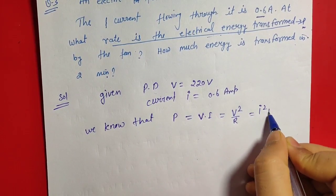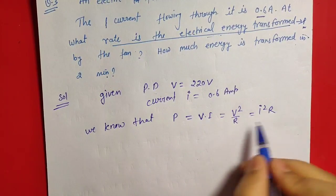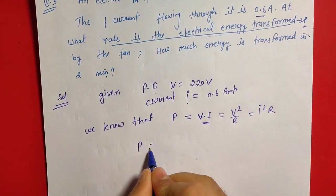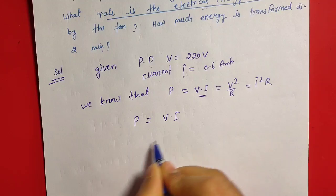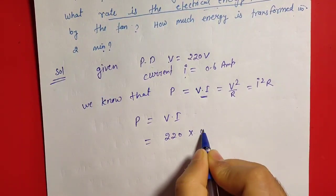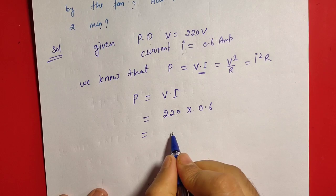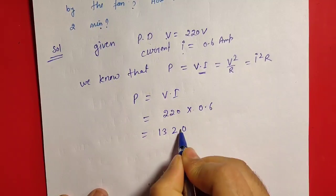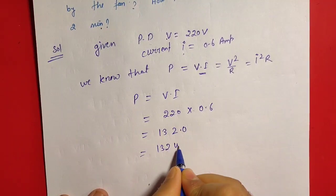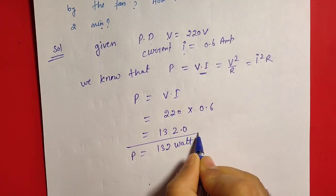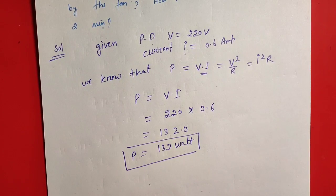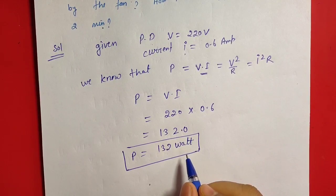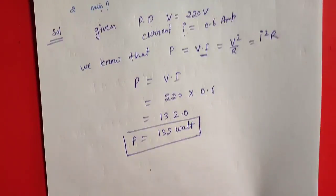Here three formulae power ke: V into I or V square by R or I square R. Three formulae use kar sakte hai, but here we have voltage and current given, so V into I use karenge. Then P is equal to V into I, V is 220 into 0.6. Multiply, 6 to 12, 6 to 12 plus 1 is 13, decimal here is 132 watt. This means fan per second per second 132 joule energy consume or transform to heat or other form.